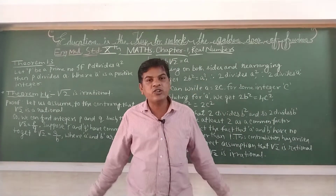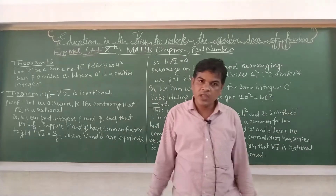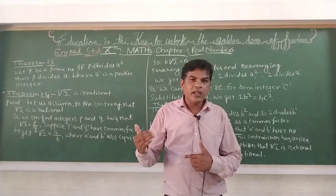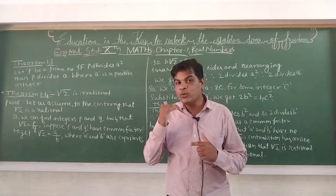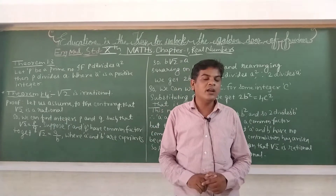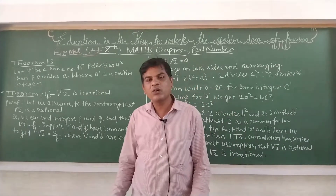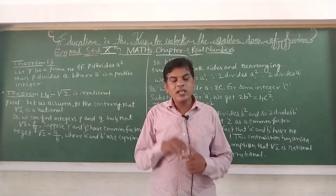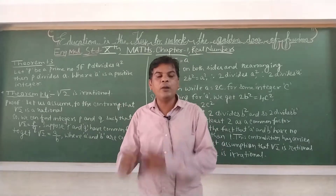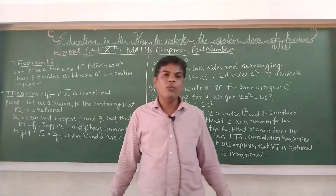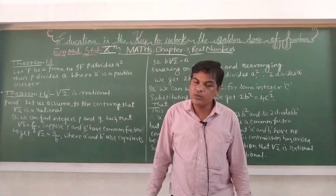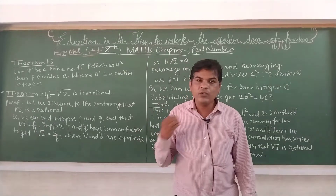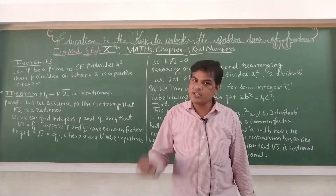In 9th standard you have already studied about the irrational number. Before knowing about the irrational number, you have to know about the rational number first. What do you mean by rational number? Rational number is in the P upon Q form, where Q is not equal to 0 — the denominator is not 0. That is a rational number.